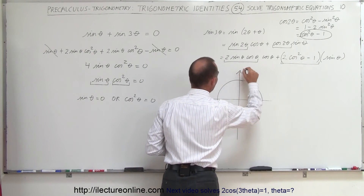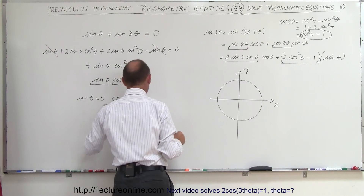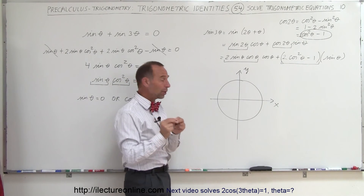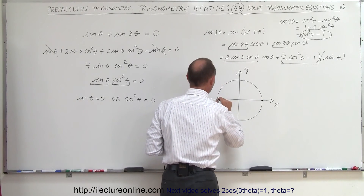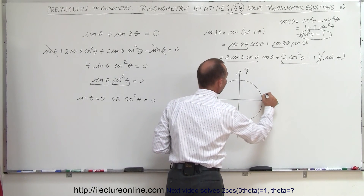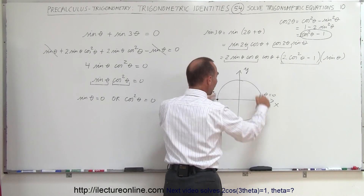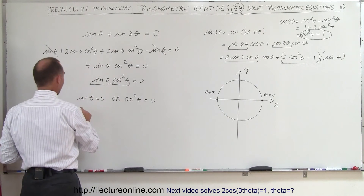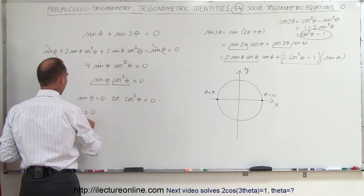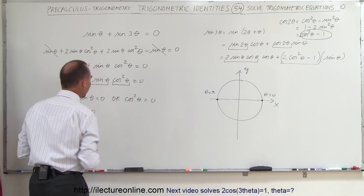Draw the unit circle: here's the y-axis and x-axis. The sine of theta represents the y-value of a point on the unit circle. At theta equals zero and theta equals pi, the y-value is zero, so the sine equals zero. Therefore theta equals zero and theta equals pi are the two possible answers from that equation.